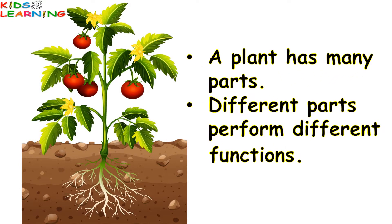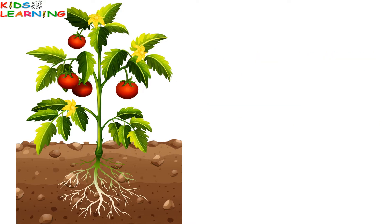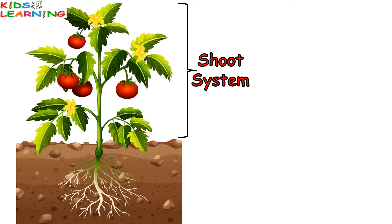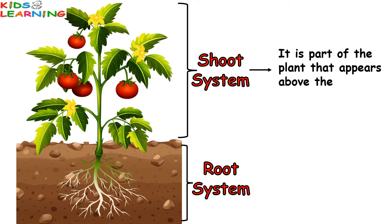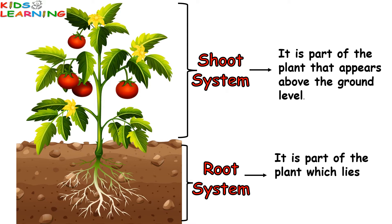A plant has many parts, and different parts perform different functions. A plant is basically divided into two parts: the shoot system and the root system. The shoot system is the part of the plant that appears above the ground level. The root system is the part of the plant which lies underneath the soil.